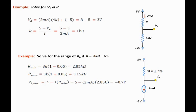VA min is 5 minus 2 milliamps times 3.15k. That's the maximum resistance, which is equal to negative 1.3 volts.